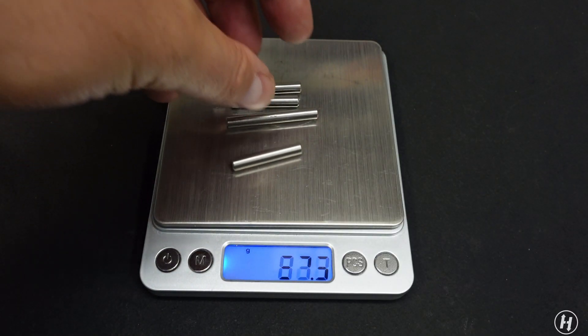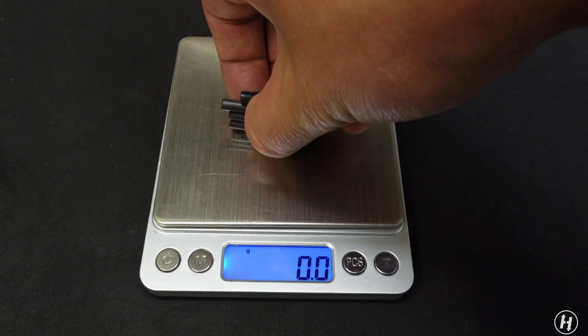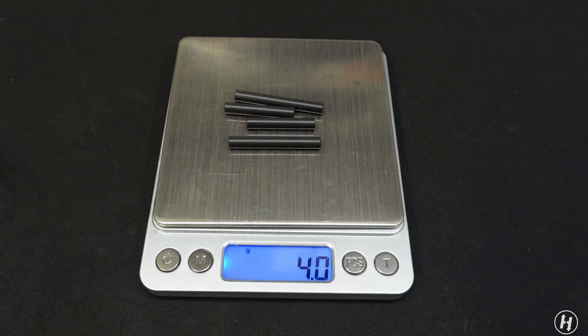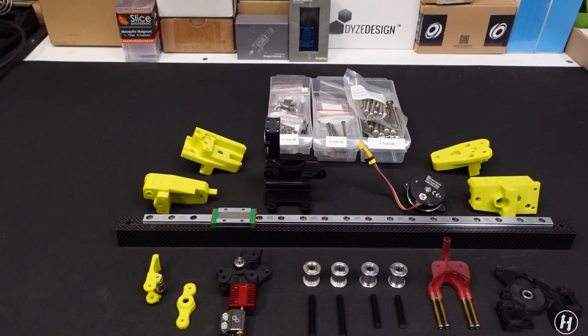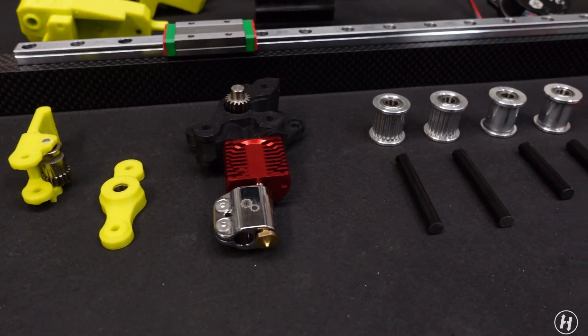Now let's see how much weight are we going to save with those carbon fiber shafts. Wow! We're saving just over 17 grams with this simple modification. We are now ready to assemble all of these shiny parts and make this super light X assembly.